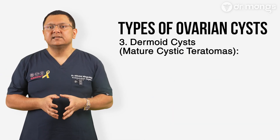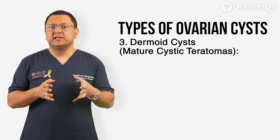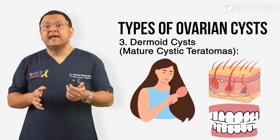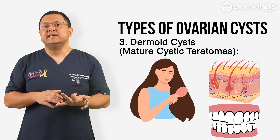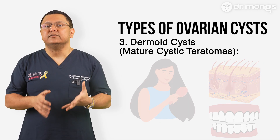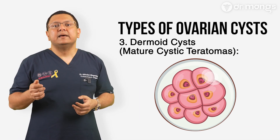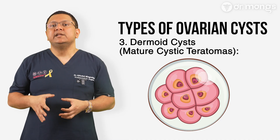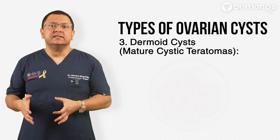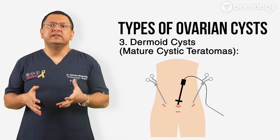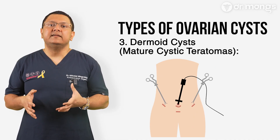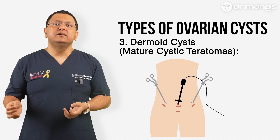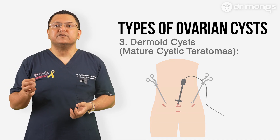Dermoid cysts, or mature cystic teratomas, are benign cysts that contain hair, skin, teeth, bone, fat, or other tissues. They develop from embryonic cells and can grow quite large but are usually non-cancerous. Surgical removal is often recommended, especially if the cyst grows, causes discomfort, or is at risk of torsion.